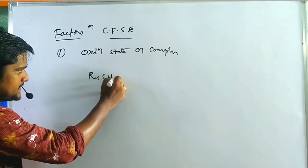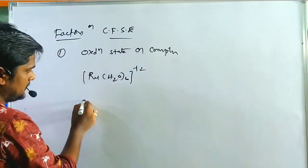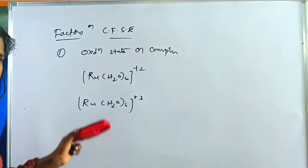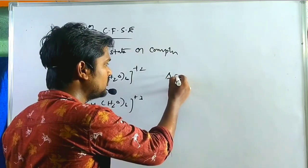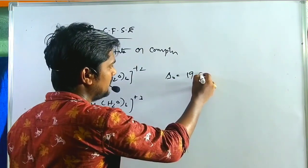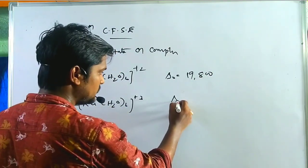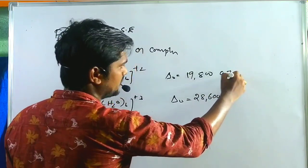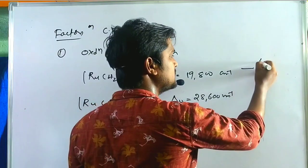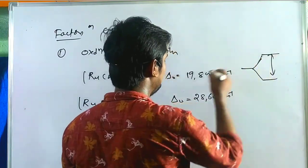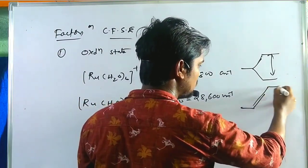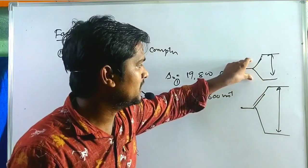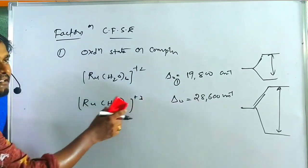Let us take some examples: [Ru(H₂O)₆]²⁺ and [Ru(H₂O)₆]³⁺. Here the oxidation state of the complex increases from top to bottom. The delta O value for the first is approximately 19,800 cm⁻¹, and for the second it is approximately 28,600 cm⁻¹. So the crystal field splitting energy is greater in the higher oxidation state complex.